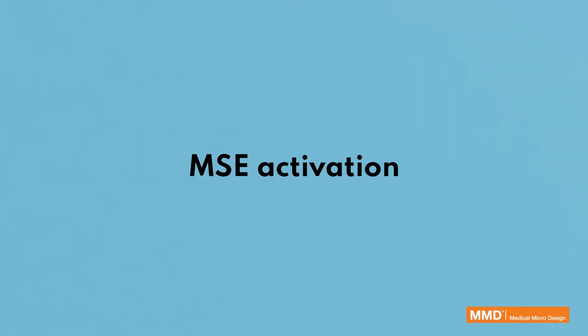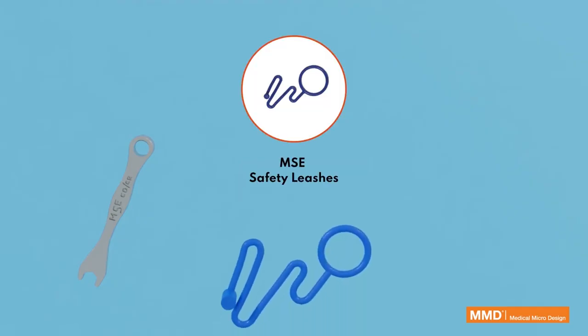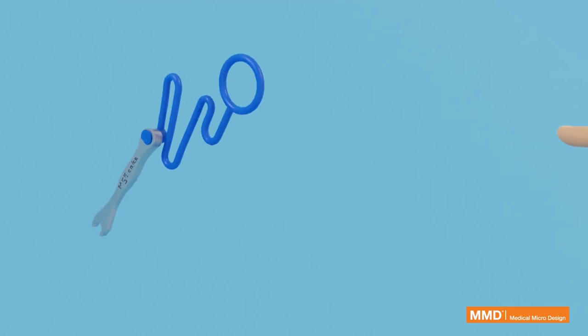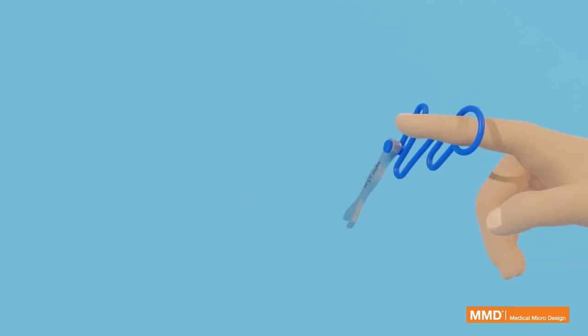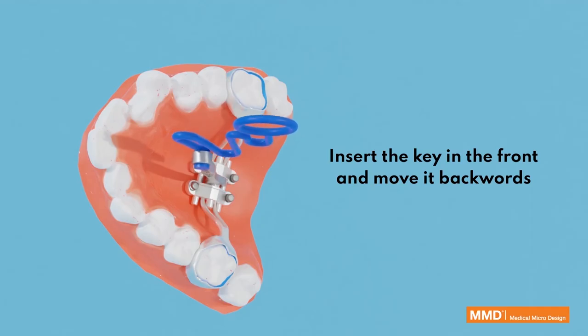MSE activation. MSE 2 activation spanner key, long. MSE safety leashes. Insert the key in the front and move it backwards.